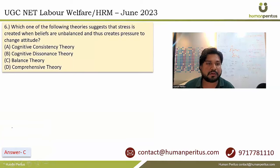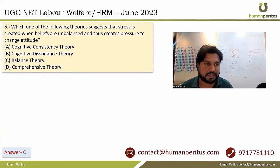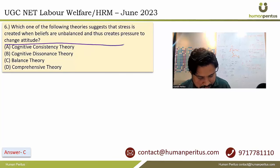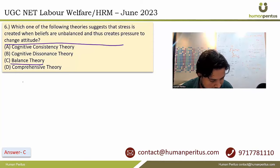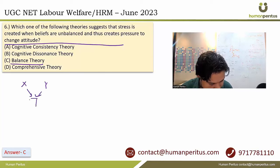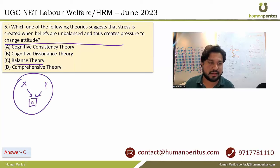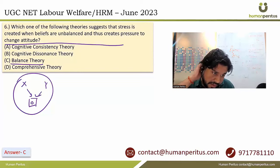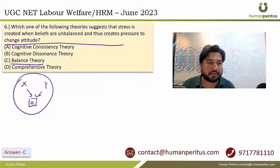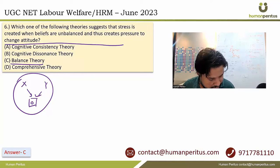Which theory suggests that stress is created when beliefs are unbalanced, thus creating pressure to change attitude? The most closely related answer is Balance Theory. When two people share the same attitude or belief about some object, an interpersonal triad forms and the relation becomes more favorable — this is positive balance. When viewpoints differ on a particular issue, it is negative balance and creates stress. So the correct answer is option C.